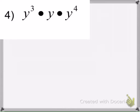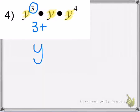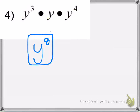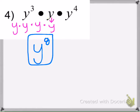Example 4: using the rule, the bases are the same, so keep it and add the exponents. We have 3 plus 1 plus 4, which is 8. Every variable without a written exponent has an implied exponent of 1, so it's important to include it. Written out, you can see there's a total of 8 y's being multiplied, giving y to the 8th.